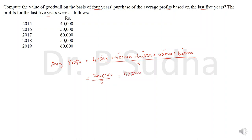After calculating average profit, the second step is to calculate goodwill. Goodwill equals average profit multiplied by the number of years of purchase. The average profit is 52,000 and the question specifies 4 years of purchase, so goodwill is 52,000 × 4 = 2,08,000.